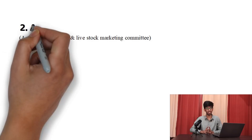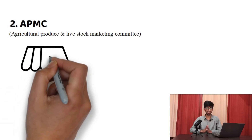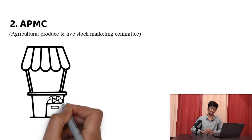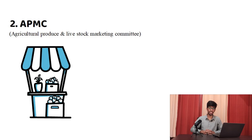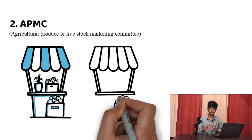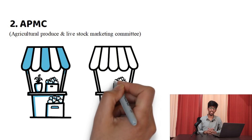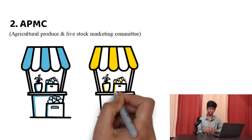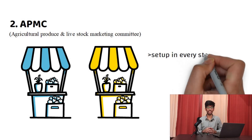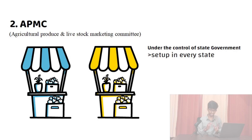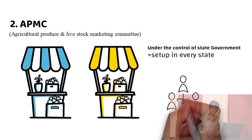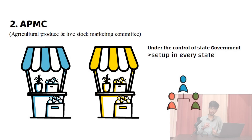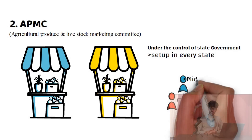APMC stands for Agricultural Produce and Livestock Marketing Committee. The APMC was set up by the government and it started setting up mandis, or markets, where the farmer could directly come and sell his produce. These mandis were set up in each state and were under the control of the state government. So a farmer growing fruits or vegetables could come to an APMC mandi and sell his produce there.